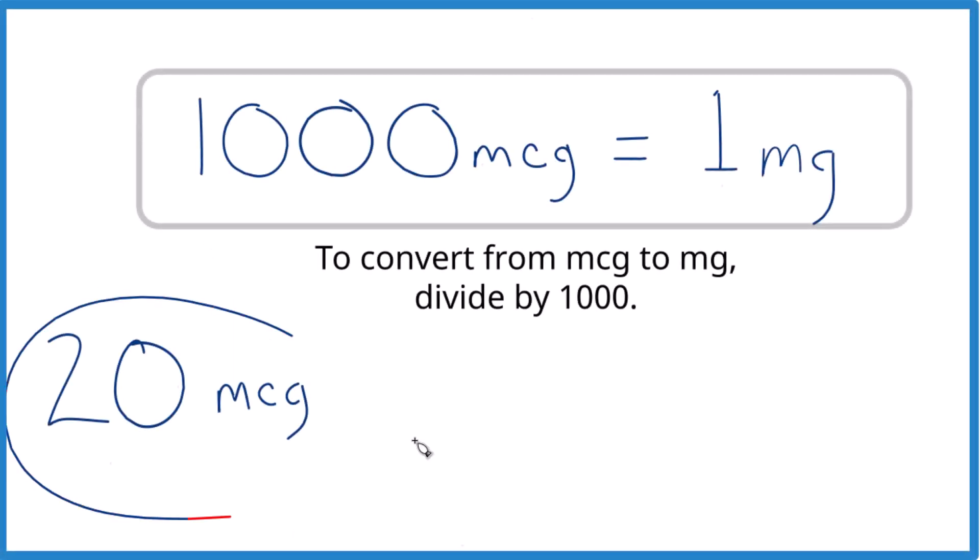So let's convert 20 mcg, that's 20 micrograms, to milligrams. So when we have a thousand micrograms, that equals one milligram.